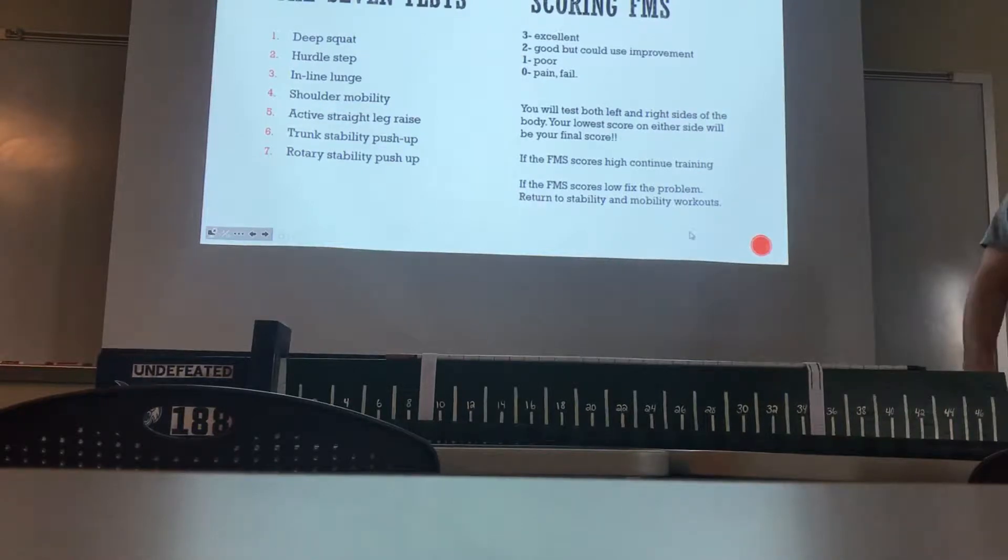So let's say if I do the shoulder mobility, I go to my right side like this, I get a three. I do my left, that's not as far, I'm gonna get a two. So therefore my overall score is going to be a two on shoulder mobility. Make sense?